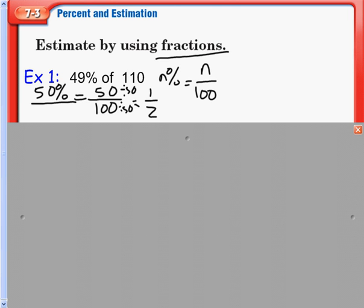Now we have one half of 110. Of is a key word for multiplication. So one half times 110, and we can now cancel. We can divide 2 by 2 to get 1, and 110 by 2 to get 55.